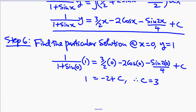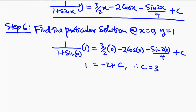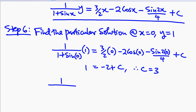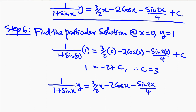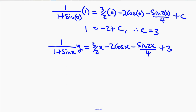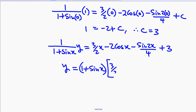Which means our particular solution is 1 over 1 plus sin x times y equals 3 over 2 x minus 2 cos x minus sin 2x over 4 plus 3. You can make y the subject of the formula, so y equals 1 plus sin x times the quantity 3 over 2 x minus 2 cos x minus sin 2x over 4 plus 3.